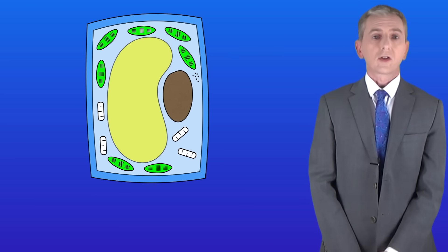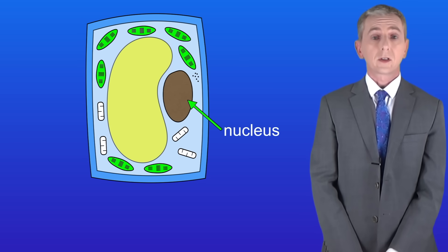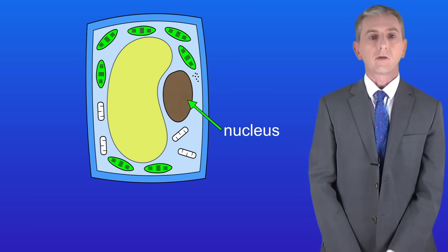Now plant cells have several structures in common with animal cells. You can see that we have a nucleus which contains genetic material. As we said in a previous video, plants are eukaryotes.